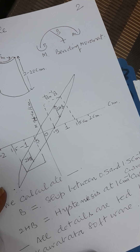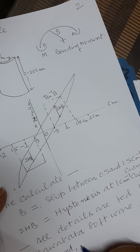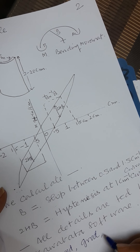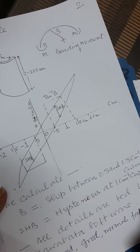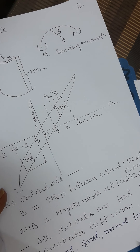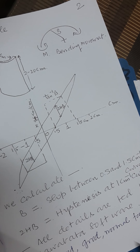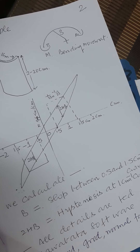All the values are fed to the Kawabata instrument software and we calculate whether the fabric is very good, good, normal, or poor. This is all about the KESFB2 bending instrument. Thanks.